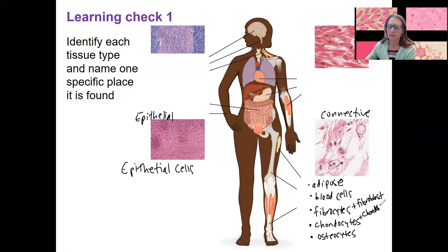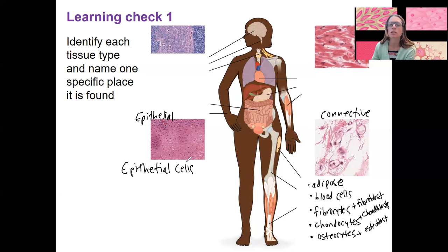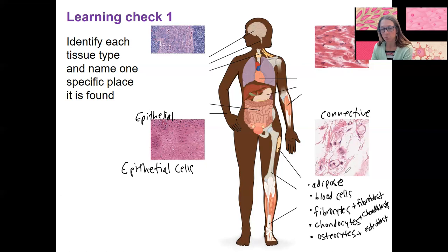We also have chondroblasts and osteoblasts. There is one more cell type in bone tissue that we'll introduce — this isn't comprehensive, but it covers key terminology. Remember, we're talking about tissues — something made up of cells and the stuff that those cells produce. For epithelial tissue, that's mostly epithelial cells — these are the nuclei here, these purple dots. Connective tissue has a lot of extracellular matrix produced by those cells.